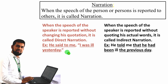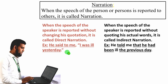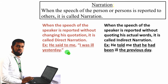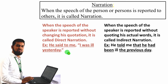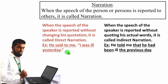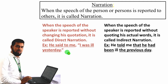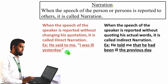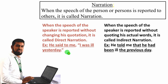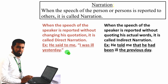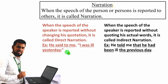Narration is of two types. The first one is direct narration and the second one is indirect narration. In direct narration, you will find two parts: the first one is the reporting verb outside of inverted commas, and then you will get the reported speech, which is inside the inverted commas. In indirect speech, there is no inverted comma or comma — you will only find a full stop at the end of the sentence.